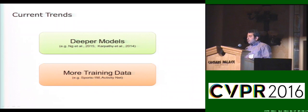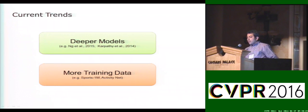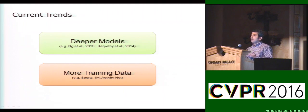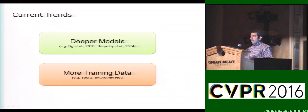The current trend in action classification includes various strategies to make models deeper or add more training data. Deeper models are achieved by adding more layers or more hidden units. However, making deep models deeper typically requires more hand-tuning of hyperparameters, and because of the huge parameter space, they require more training data for robust learning. Unfortunately, in some domains we do not have access to such large amounts of training data.